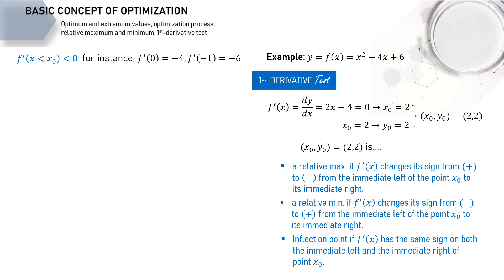Now, what's the value of the first derivative when x is at the immediate right of x₀, or when x is bigger than x₀? It's positive. We may choose any number bigger than 2. With x equals 3, the first derivative equals 2, a positive number. With x equals 4, the first derivative equals 4, also a positive number.